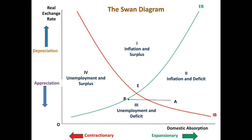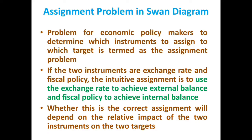So if the country wants to move from point A to point E, the authorities need to deflate the economy as well as undertake devaluation by an appropriate amount. That will be the focus of the assignment problem. The assignment problem refers to which instrument should be assigned to attain a specific target. We have two targets — internal and external balance — and two policies: fiscal policy and exchange rate policy. In the SWAN model, the assignment problem is solved by recommending exchange rate policy to achieve external balance and fiscal policy to achieve internal balance. Whether this assignment is correct depends upon the relative impact of the two instruments.